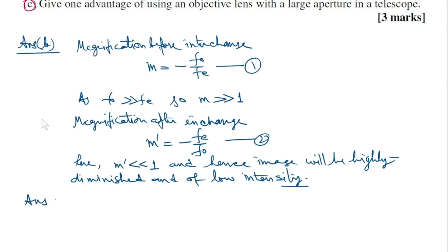Answer part C. Larger aperture of objective lens in the telescopes in fact ensures the brightness of the image.